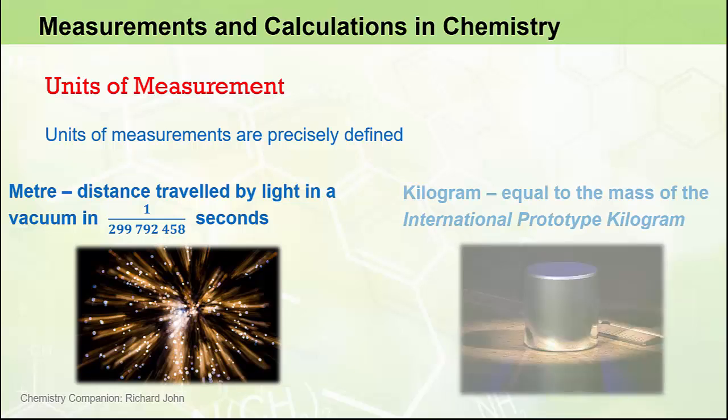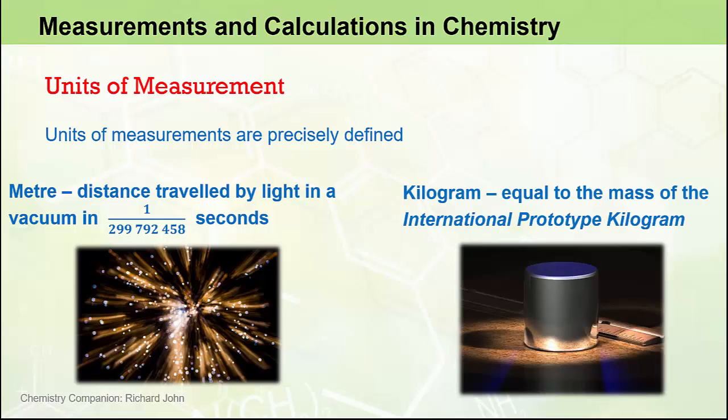And similarly, a kg is equal to the mass of the international prototype kilogram, which is a cylindrical piece of platinum iridium alloy located in the sealed vault just outside of Paris in France.